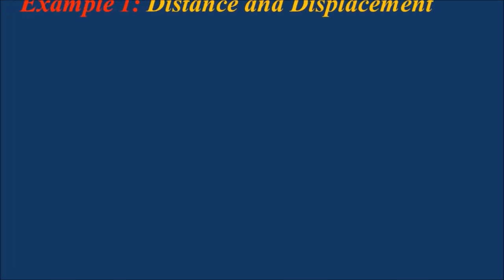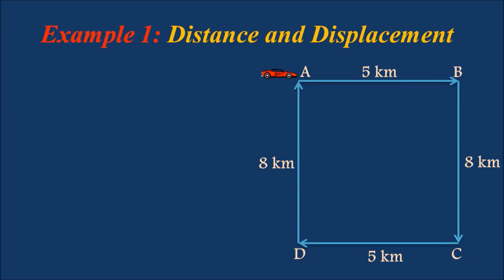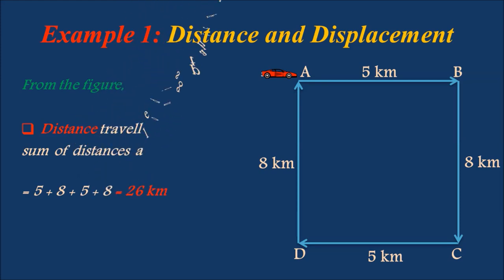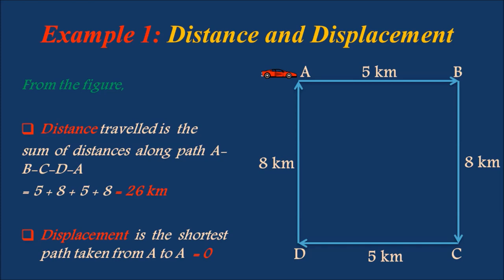Consider a person who starts from position A and reaches position A again by moving along the path A, B, C, D, A. The distance traveled is the sum of distances covered along that path, equal to 5 plus 8 plus 5 plus 8, which equals 26 kilometers. The displacement is the shortest path from A back to A, which is equal to zero.